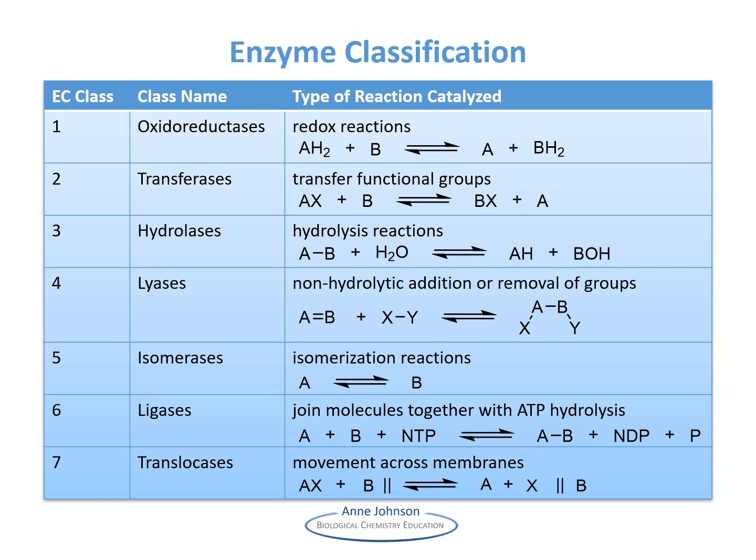What kinds of reactions can enzymes catalyze? Any reaction you could imagine could potentially be catalyzed by an enzyme. Today, we classify enzymes into seven main groups based on the reactions they catalyze. Each group contains enzymes that catalyze the same type of chemical transformation and has several subdivisions based on factors such as bonds broken or formed and cofactors used. The EC number for any particular enzyme is governed by the International Union of Biochemistry and Molecular Biology and is especially useful when multiple different names have been given to an enzyme.